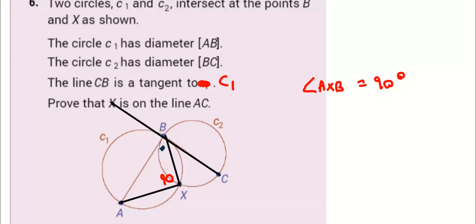Look at this. See the way BC is the diameter of the other circle? It's another angle in a semicircle. So that means the two of these are 90 as well.